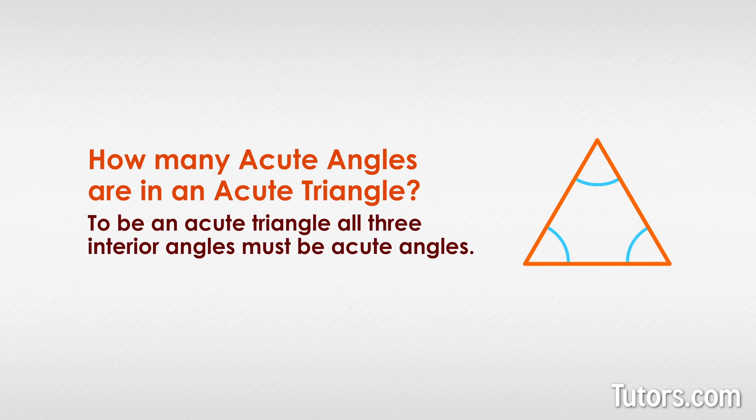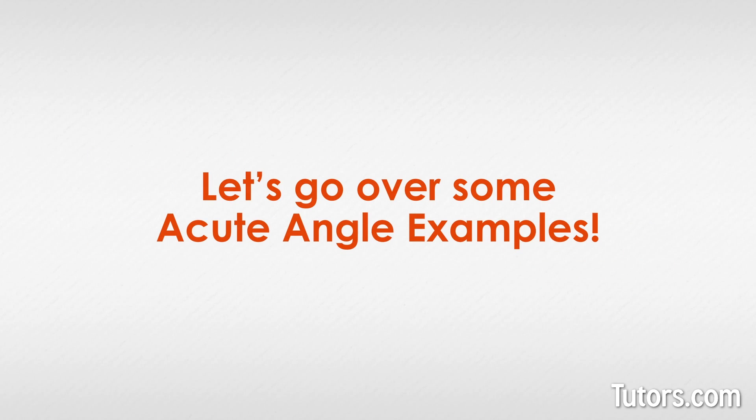A good example of an acute triangle is an equilateral triangle. We know that the three interior angles of all triangles must sum to 180 degrees, so in an equilateral triangle where all three angles have the same measure, we know that each interior angle is an acute 60 degree angle. Let's go over some acute angle examples.